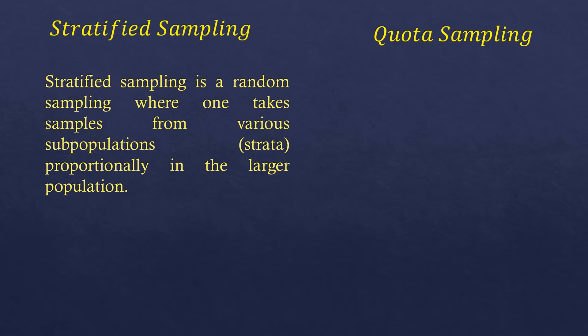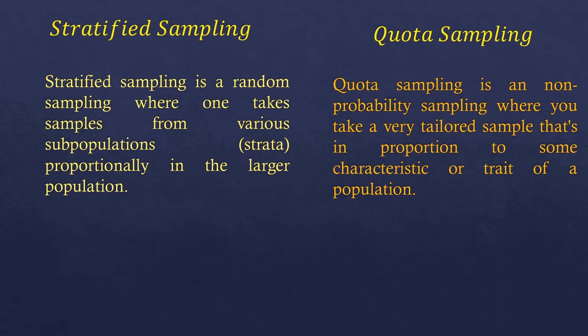Let's look at the definitions. Stratified sampling is a random sampling where you take samples from various subpopulations — called strata — proportionally to the larger population. We randomly select samples from these small groups. Quota sampling, on the other hand, is a non-probability sampling where you take a tailored sample in proportion to some characteristic or trait of the population.